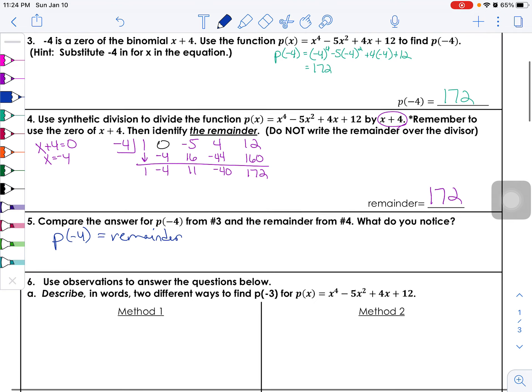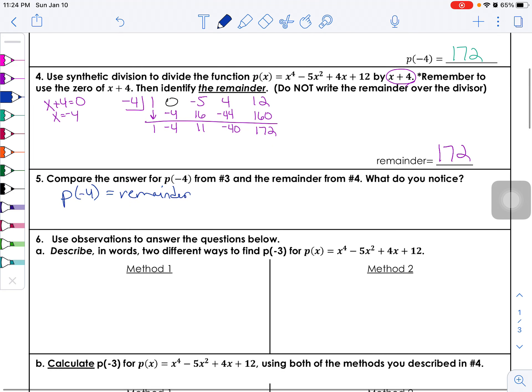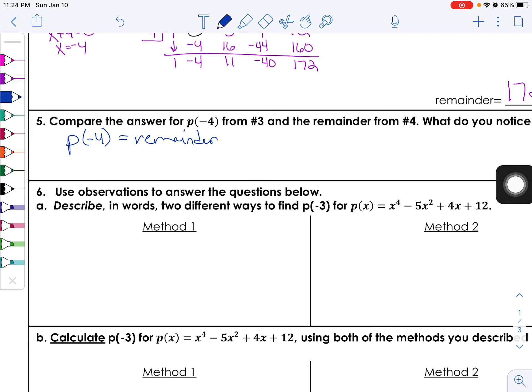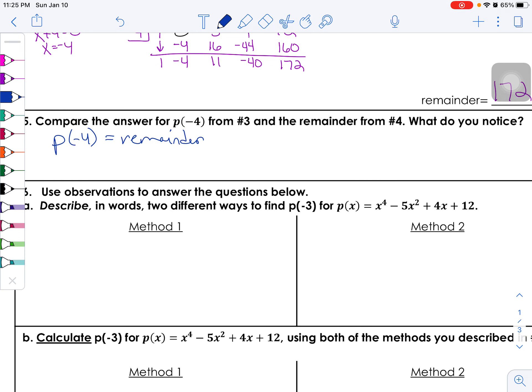I'm hoping you notice they're the exact same thing. So p of negative four is equal to the remainder from our division. Okay, so here's the deal: the remainder theorem lets us do kind of a couple things. You can actually use the remainder theorem to find function values at a given point by doing synthetic division instead of doing the actual function notation.